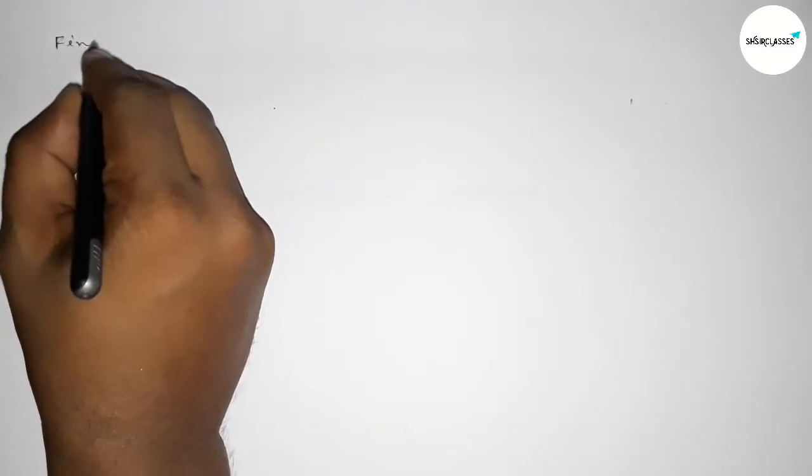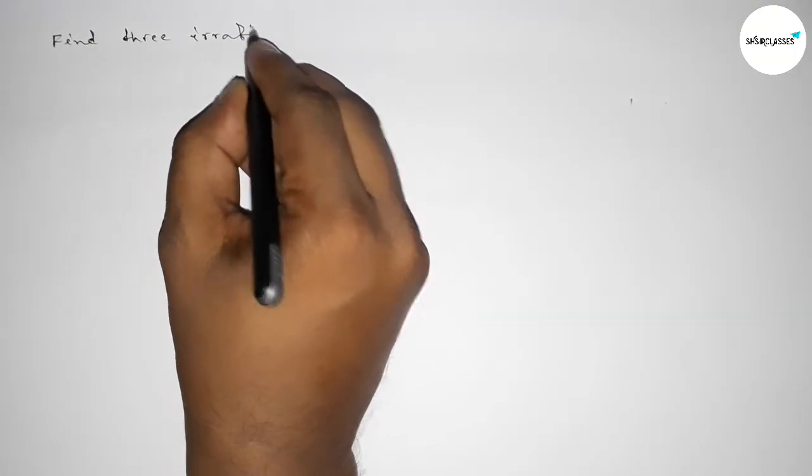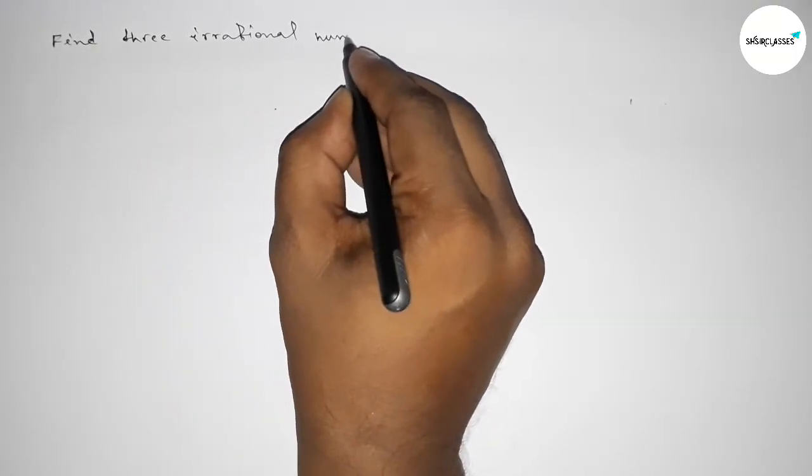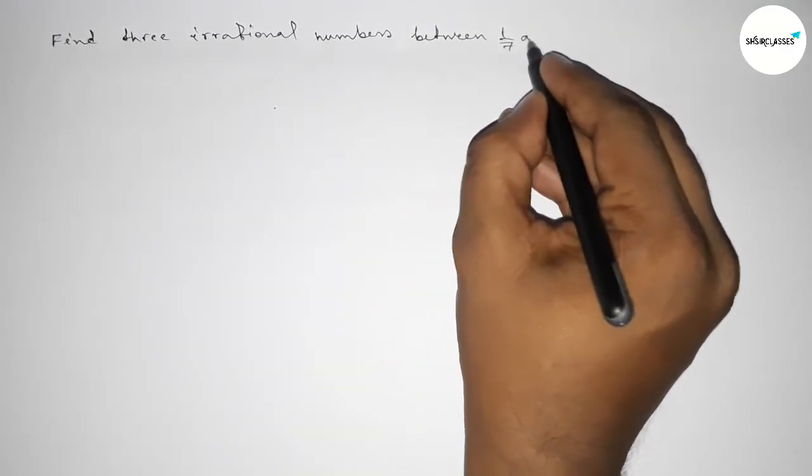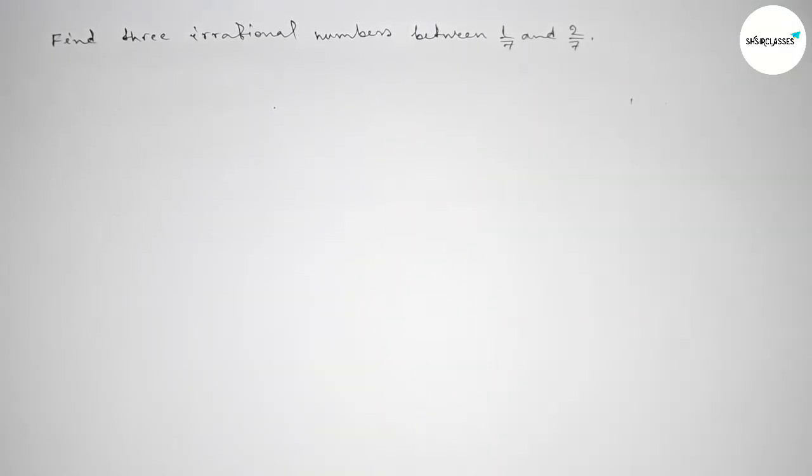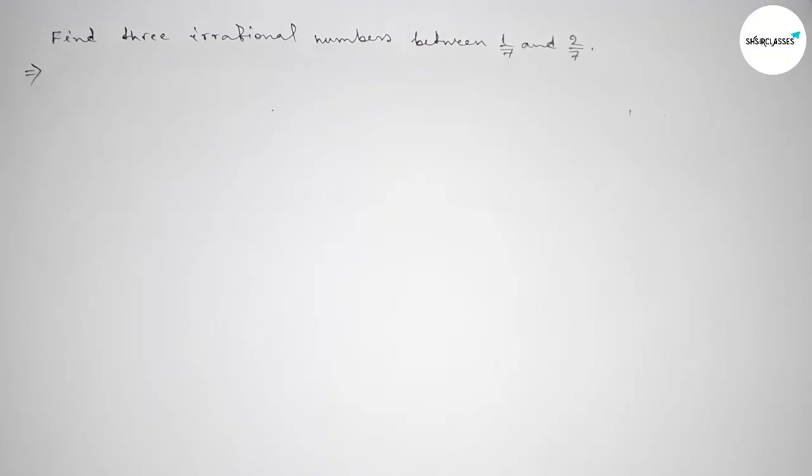Hi everyone, welcome to SI Share Classes. Today in this video we have to find three irrational numbers between 1 over 7 and 2 over 7 in an easy way. So let's start the video and solve this problem.